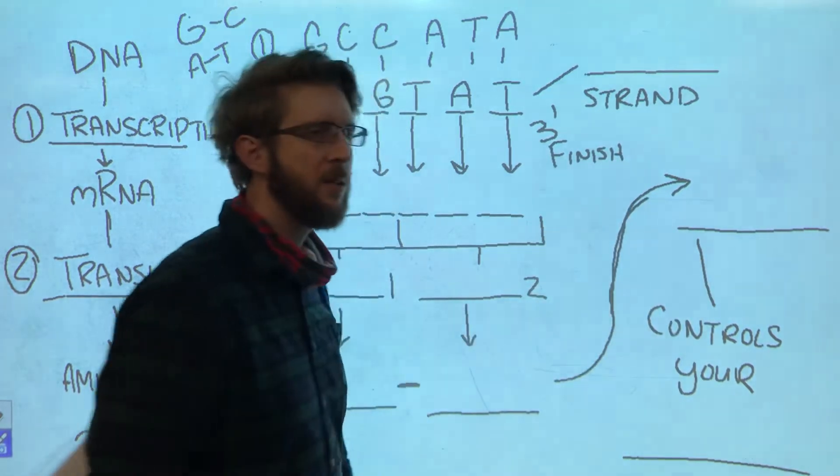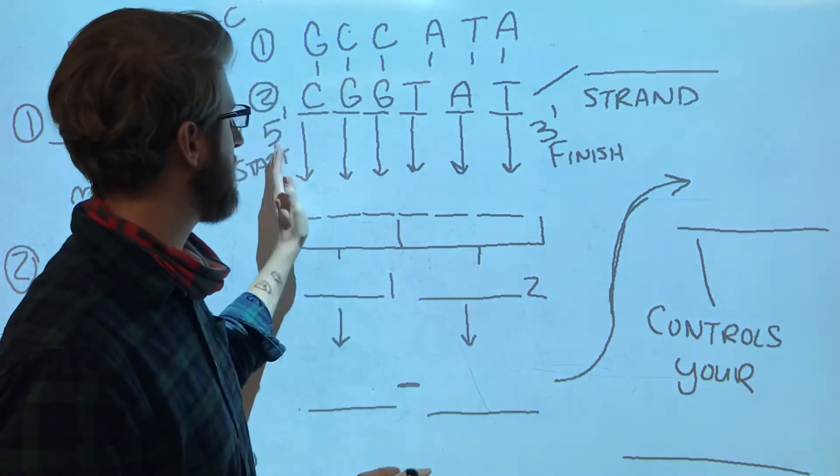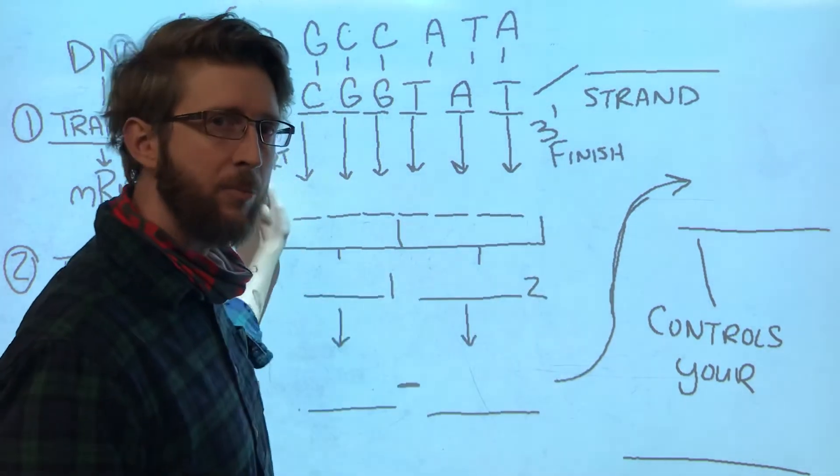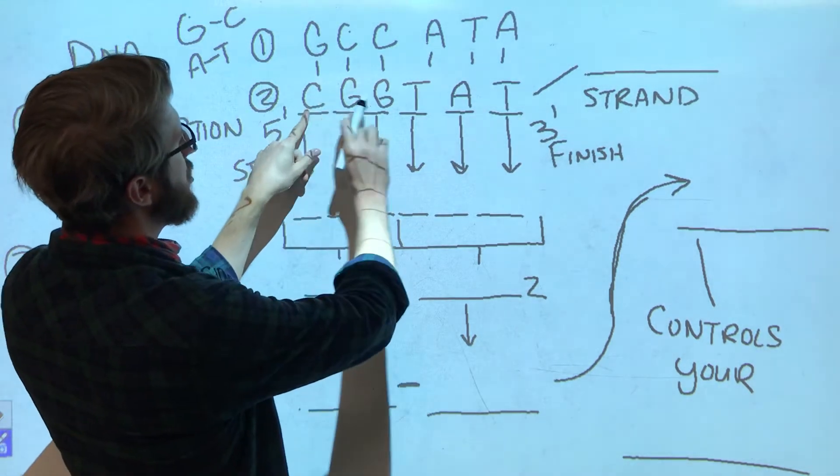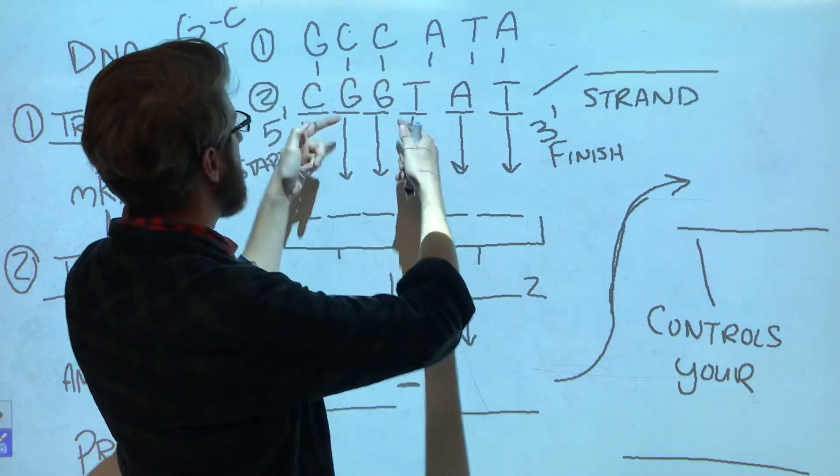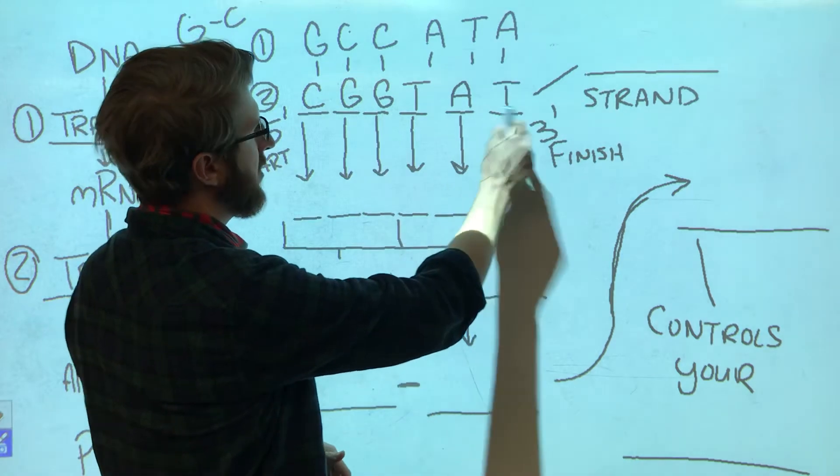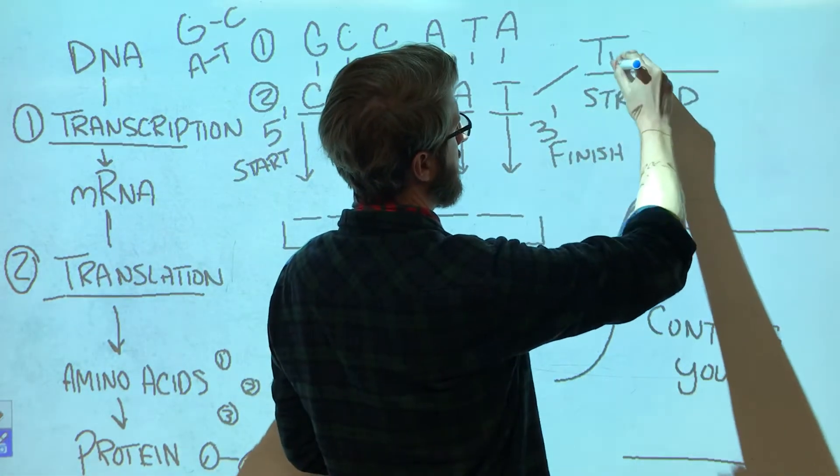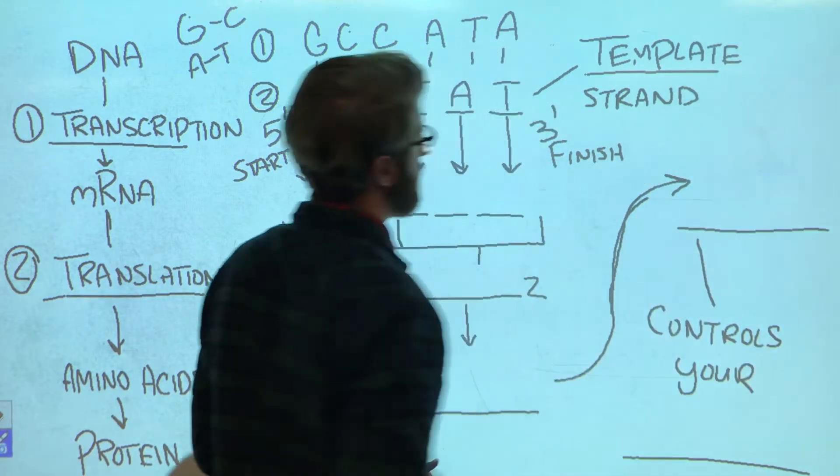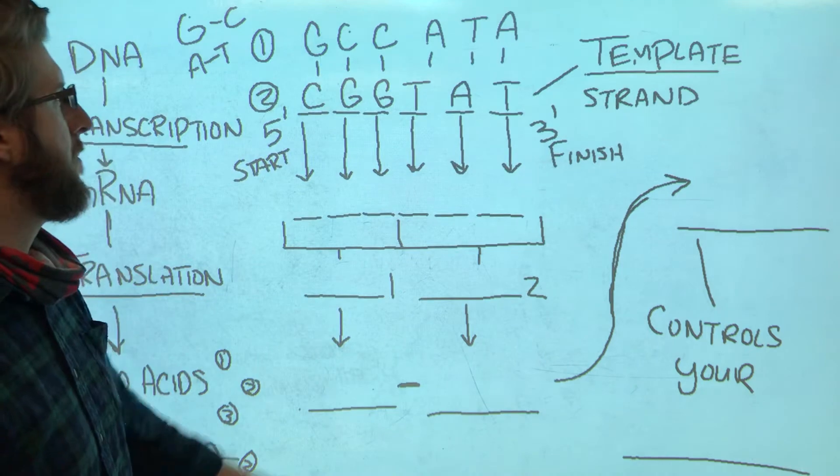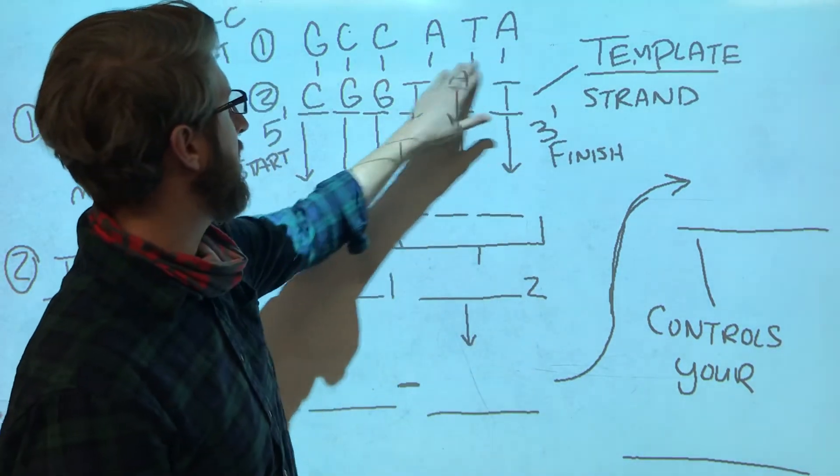We're not going to get into the mushy-gushy details of why they're called that. Just know start and finish—five prime to three prime. So this strand is the one that we are going to convert into RNA. And that strand is what we call the template strand. Two enzymes are involved in this process here.